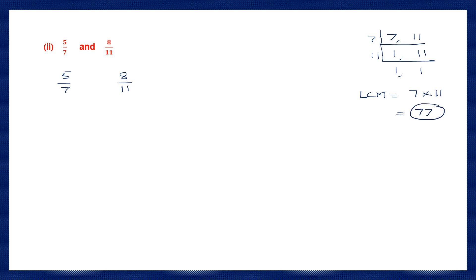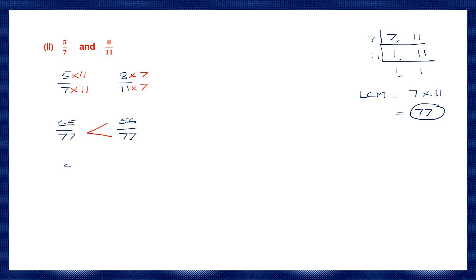So 77 is our LCM, which we'll use as the common denominator. For the first fraction, denominator 7: 7 into 11 is 77, so multiply 5 also by 11 — 5 elevens are 55. For the second fraction, denominator 11: 11 sevens are 77, so multiply 8 by 7 — 8 sevens are 56. We now have 55 by 77 and 56 by 77. Looking at the numerators 55 and 56 — 56 is greater. So 8 by 11 is greater than 5 by 7.